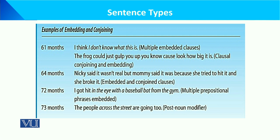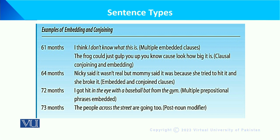As age increases, embedding and conjoining become more complex. At 72 months: 'I got hit in the eye with a baseball bat from the gym' — showing multiple prepositional phrases embedded. At 73 months: 'The people across the street are going to...' — showing post-noun modifiers. These are the sentence type examples we have reviewed.